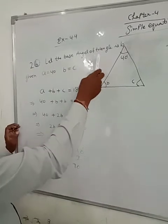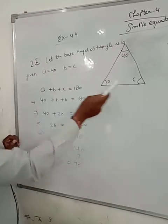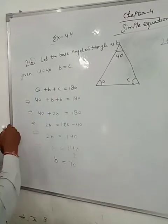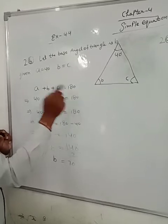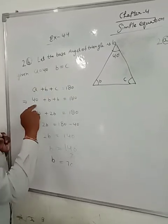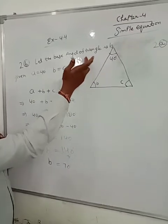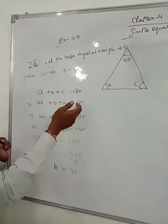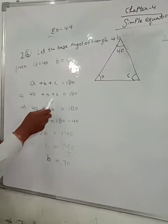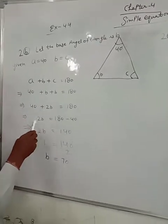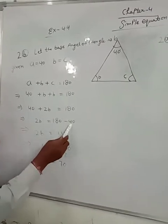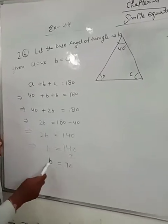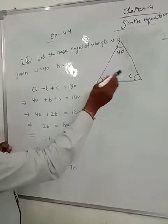We know the three angles sum to 180 degrees. The base angle is B, and B and C are equal, so C equals B. So A plus B plus C equals 180 degrees. A is 40 degrees, so 40 plus B plus B equals 180. That gives 2B equals 140, so B equals 70 degrees. The base angles are each 70 degrees.